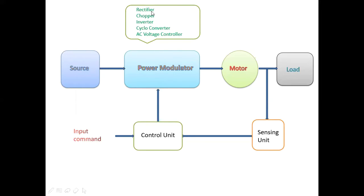We need the definitions of each converter to understand the block diagram. First, a rectifier converts fixed AC voltage to variable DC voltage. A chopper converts fixed DC voltage to variable DC voltage. An inverter converts DC voltage to AC voltage. A cycloconverter converts fixed AC voltage to variable AC voltage with changing frequency.